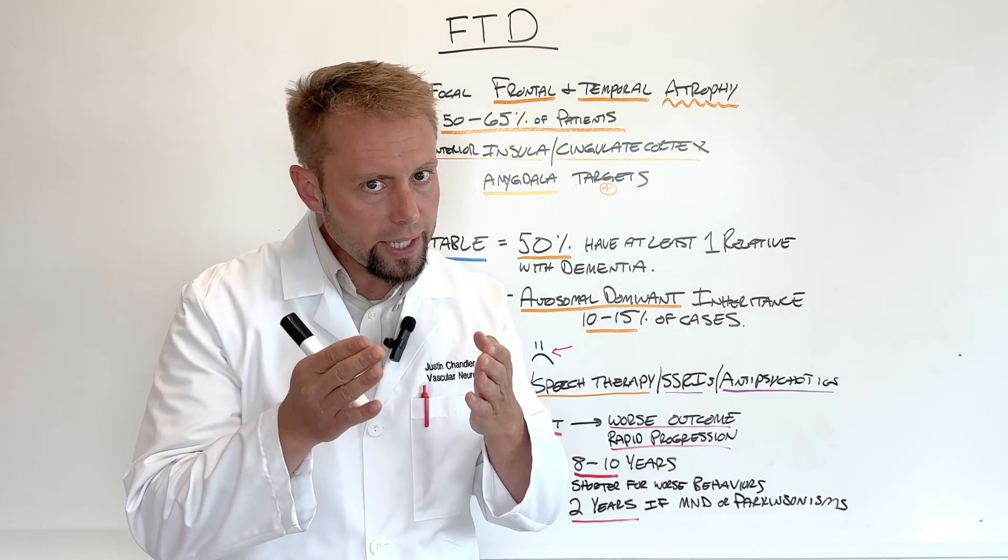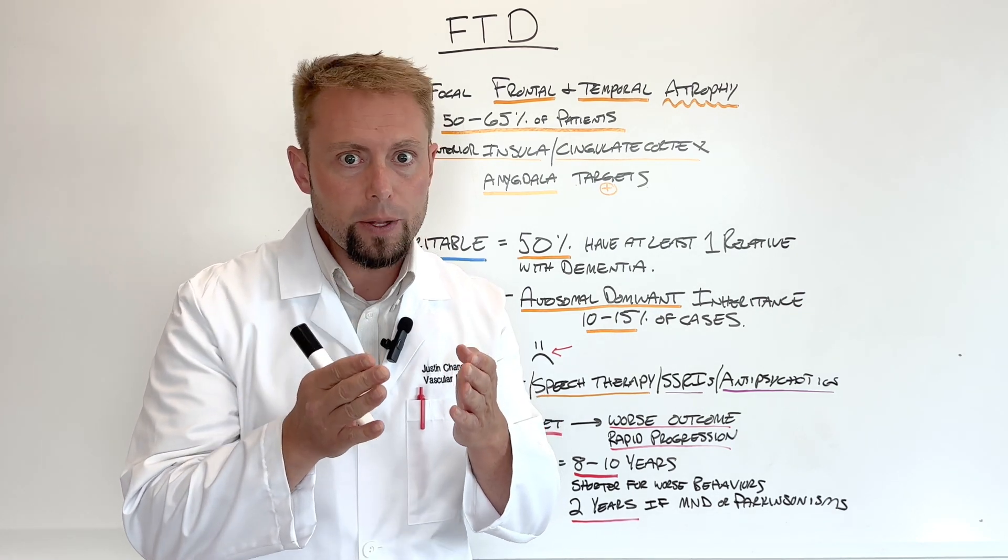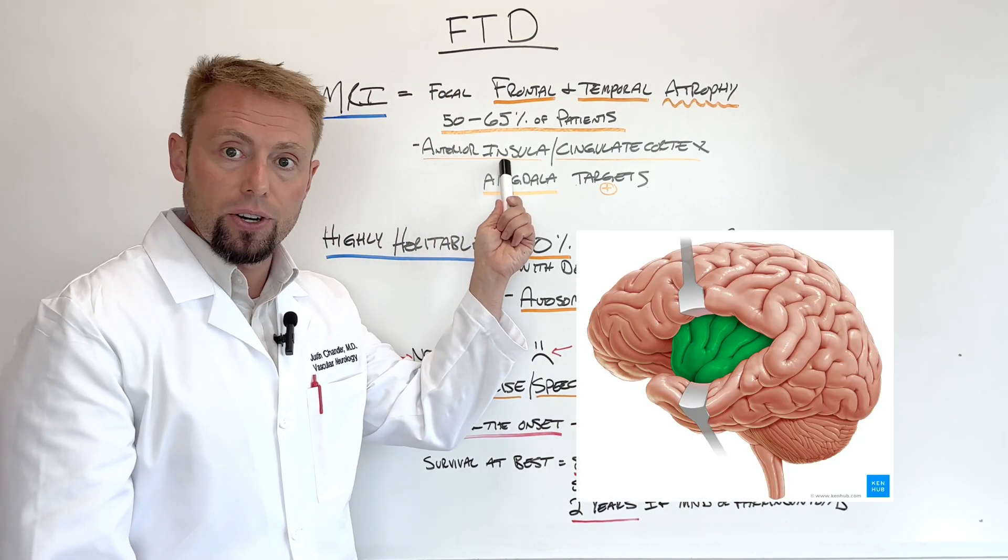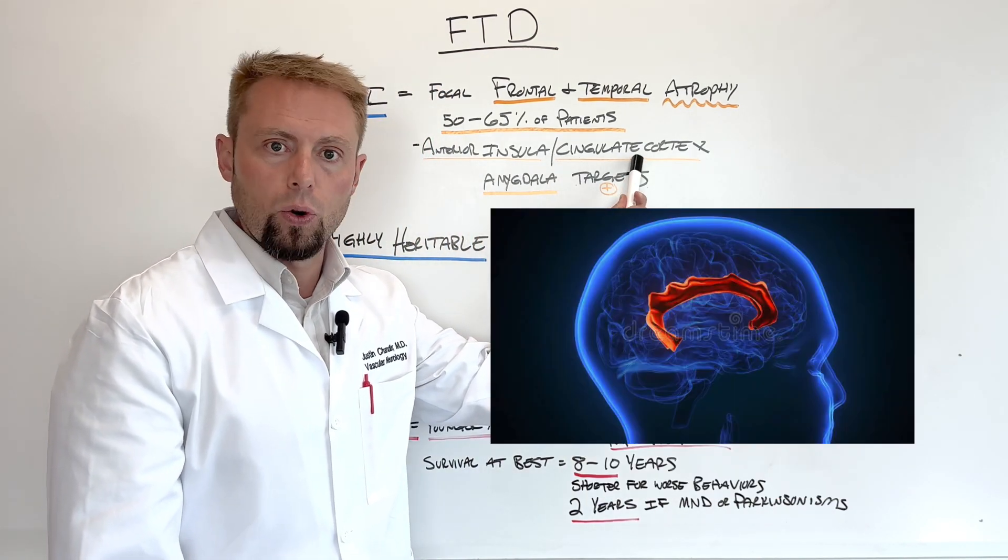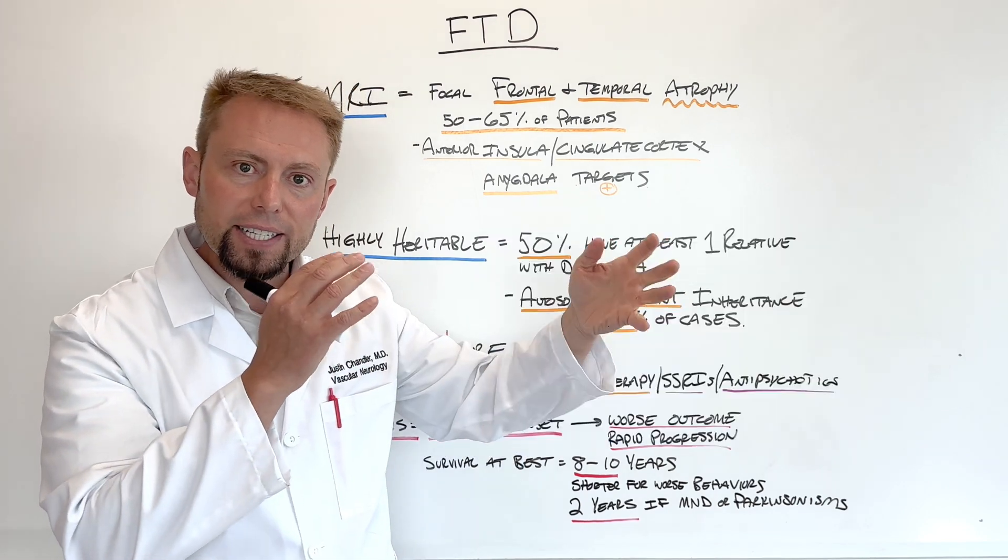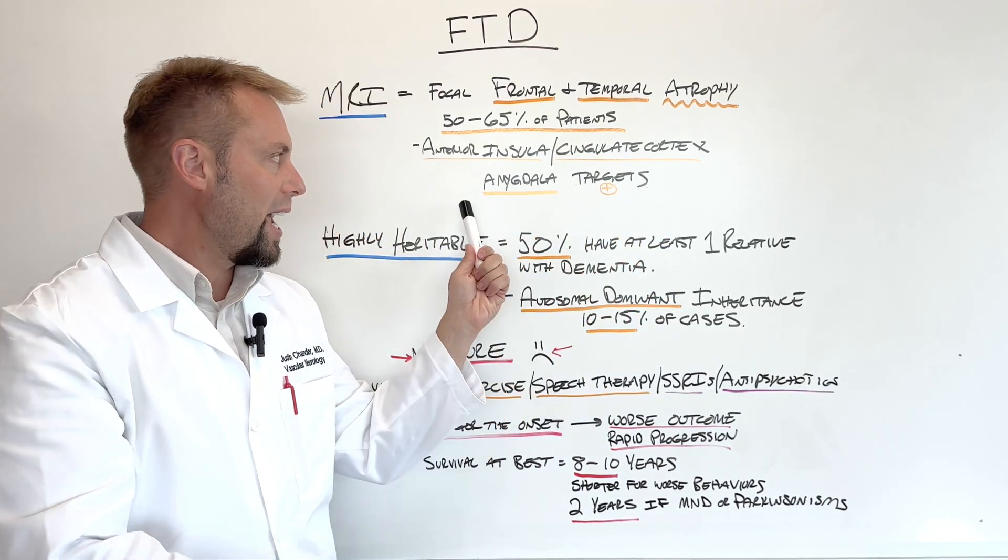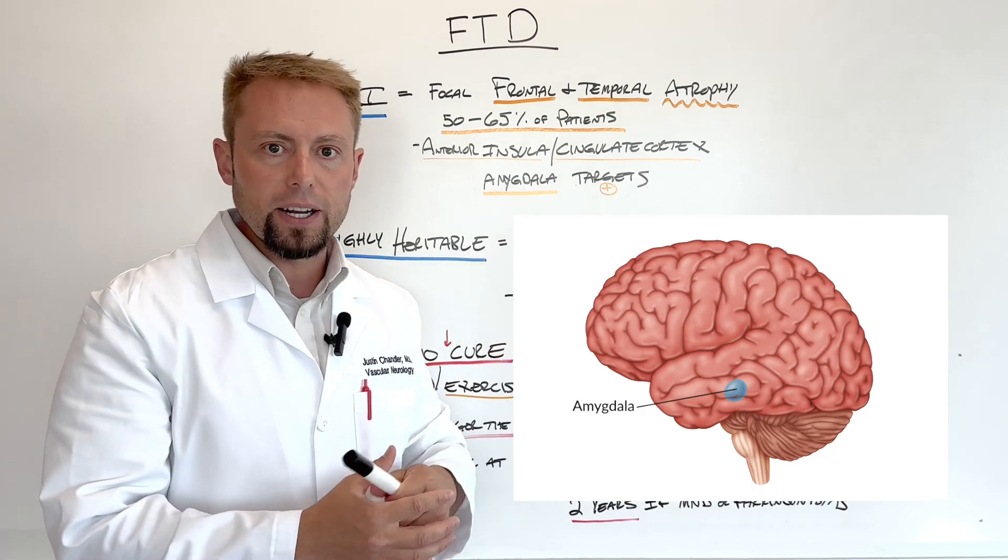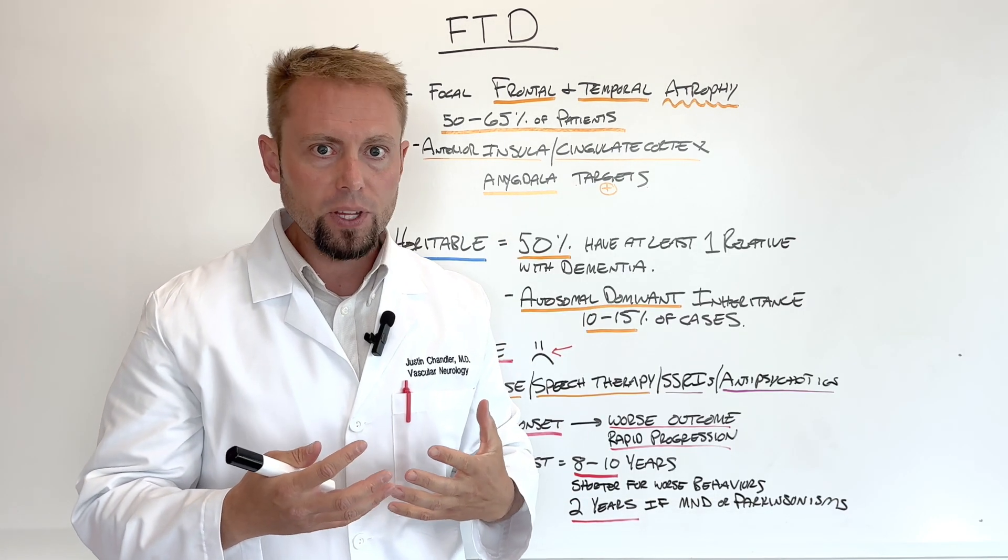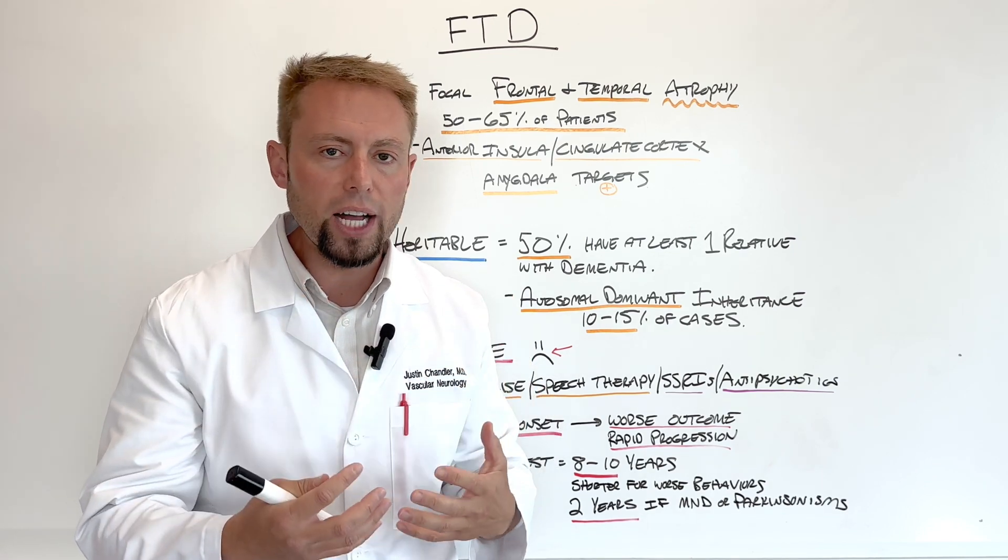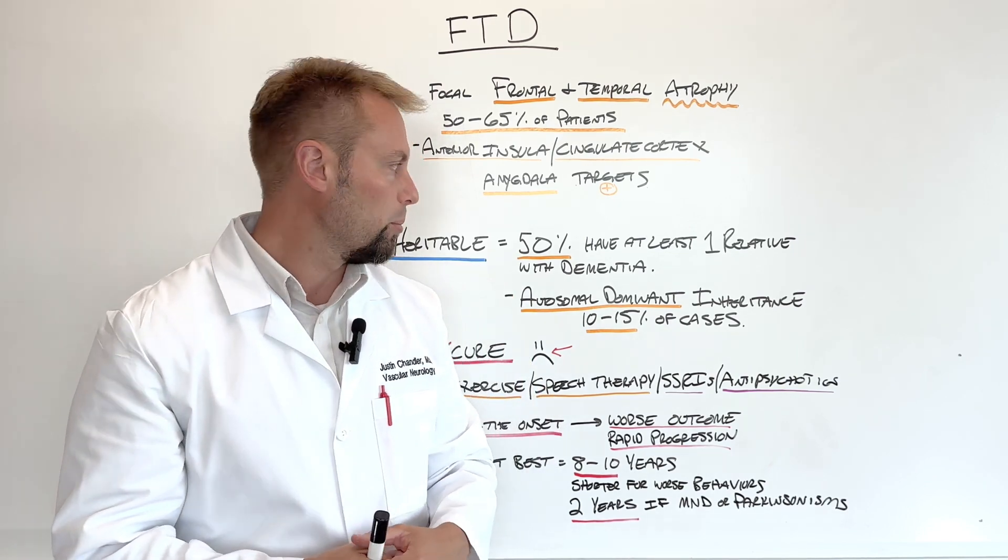There's actually specific targets, regions in the brain that have more atrophy. Those are things like the anterior insula, the cingulate cortex, places that connect other regions of the brain that help it function smoothly, and the amygdala, things that help with mood, motivation, or anger. These places all have a loss of neurons in frontal temporal dementia.